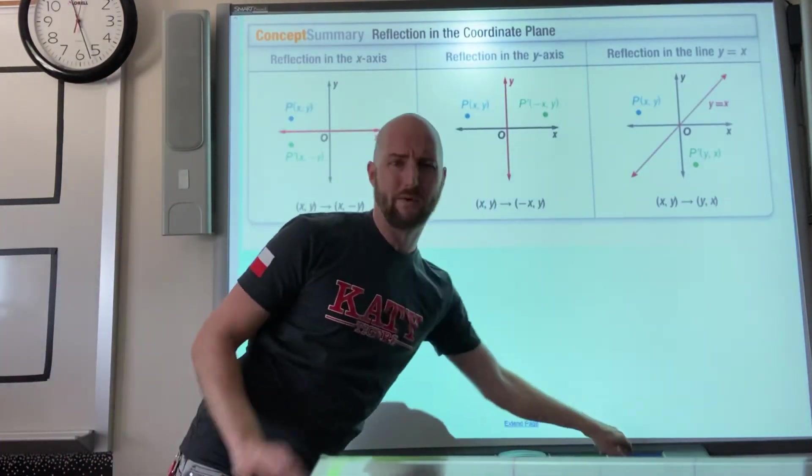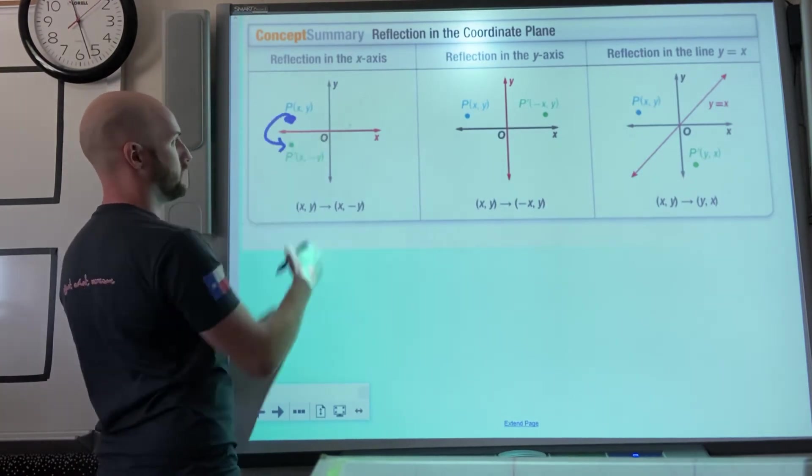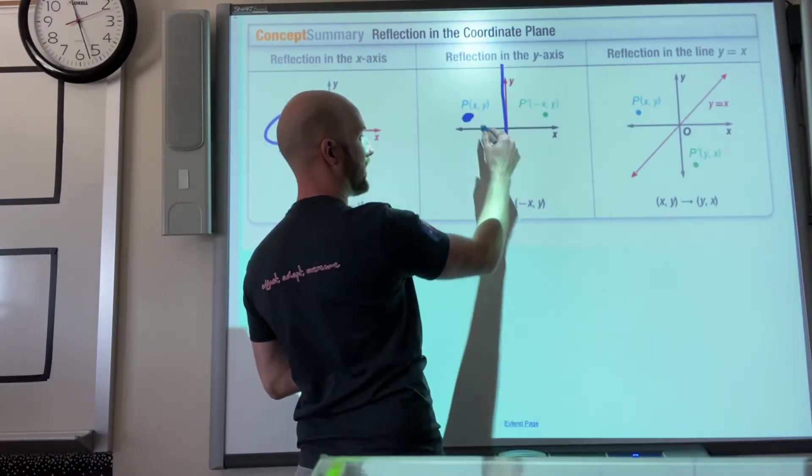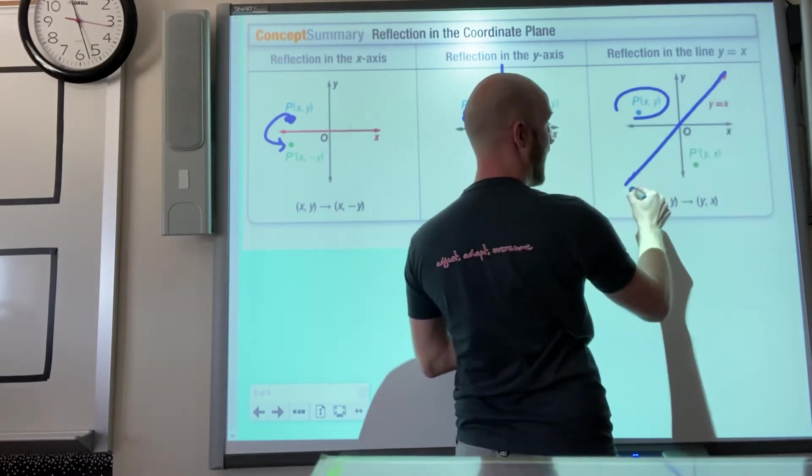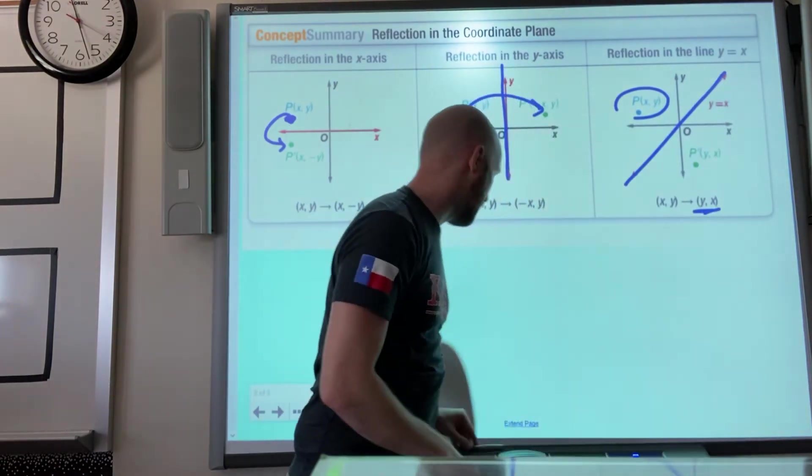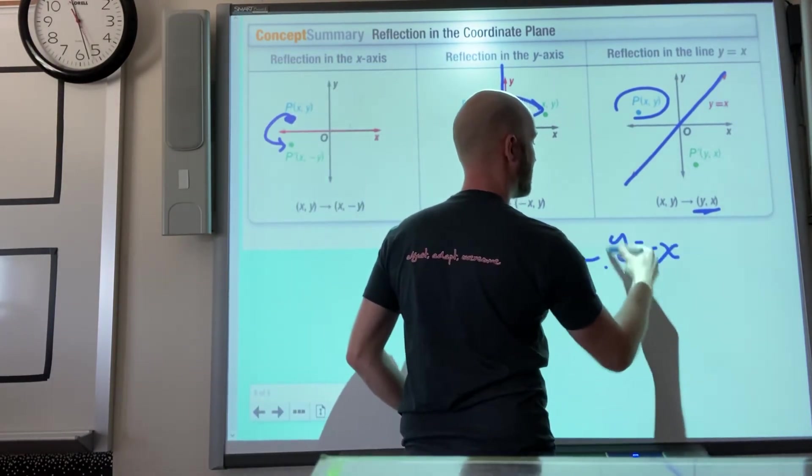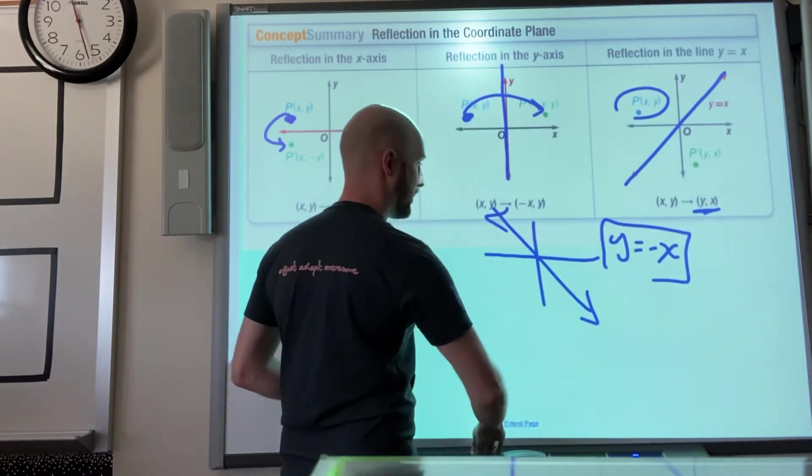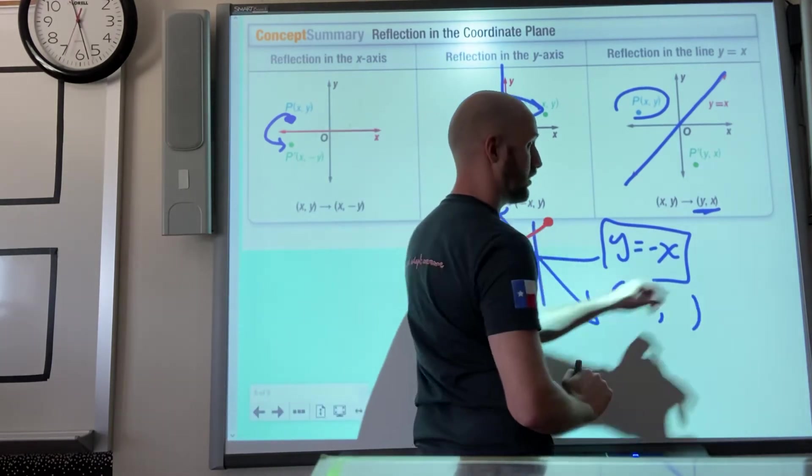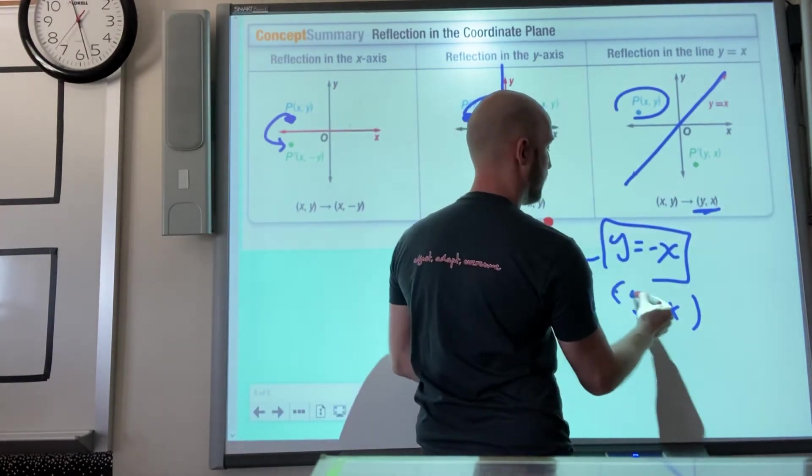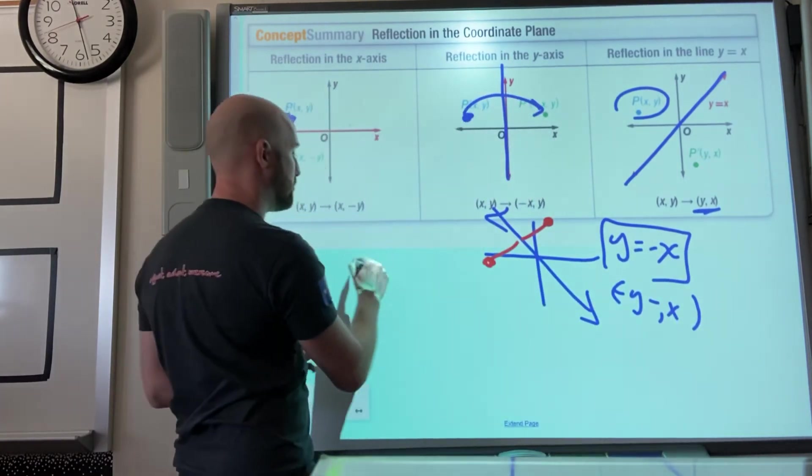So this page is just a recap of the rules. If the rules are important to you, reflecting on the x-axis, basically just the y-point changes. Here, if I reflect across the vertical axis, the x-point changes. And when I reflect across y equals x, this perfect diagonal, the y and x switch locations. The other rule that's not on here is if I reflect over the line y equals negative x, the rule for that one is similar to y equals x, you do flip them, but they are also both opposite signs.